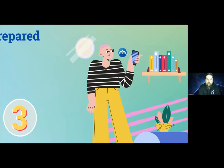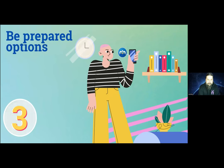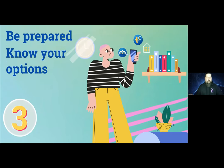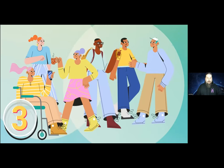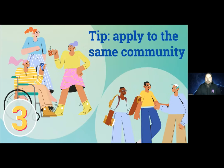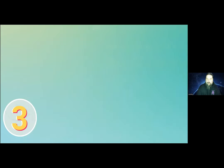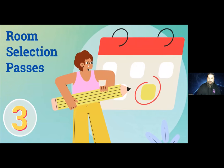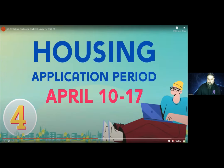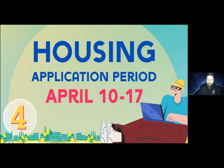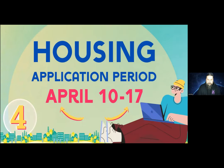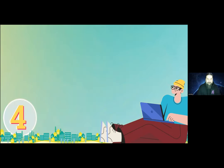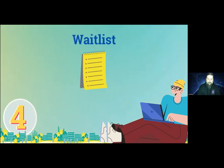Students with priority status: be prepared before you apply. Understanding your options and the room selection process can help you decide which college or community to apply to. If you would like to live with friends, you must all apply to the same community. If you apply to your affiliated college, you will be eligible for earlier room selection passes. Be sure to apply during the housing application period in April. If you have priority status, you must apply by the deadline or you will lose priority. If you don't have priority status, you will be higher on the general waitlist if you apply during this time.